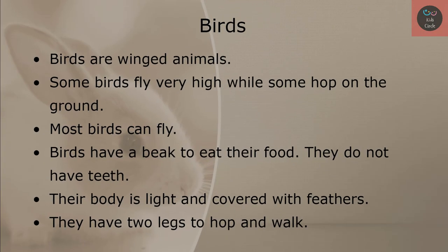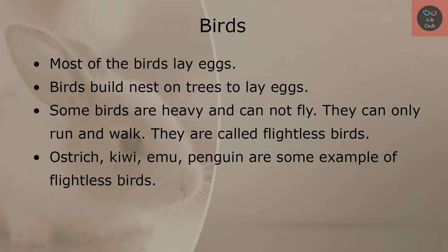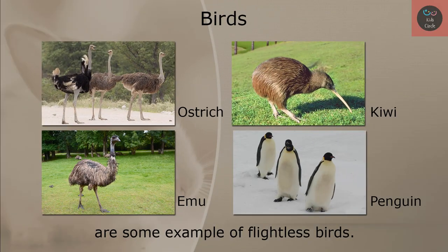Birds. Birds are winged animals. Some birds fly very high while some hop on the ground. Most birds can fly. Birds have a beak to eat their food; they do not have teeth. Their body is light and covered with feathers. They have two legs to hop and walk. Most birds lay eggs and build nests on trees. Some birds are heavy and cannot fly — they can only run and walk. They are called flightless birds. Ostrich, kiwi, emu, and penguin are some examples of flightless birds.